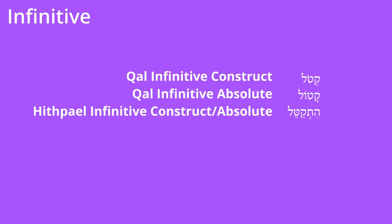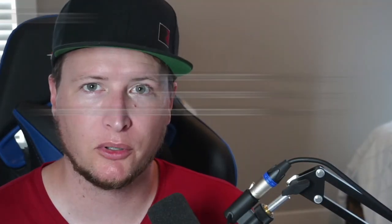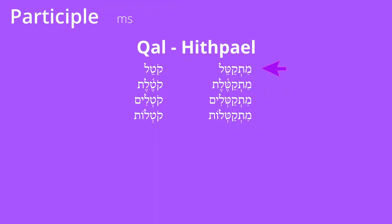The infinitive construct and infinitive absolute match the second masculine singular imperative in Hithpael: Hithkatel. In the participle, with the mem, we get 'Mith' at the beginning. And don't forget the dagesh forte in the second root consonant — consistent, just like Piel. Compare with Qal: Kotel / Mythkatel; Koteleth / Mythkateleth; Kotlim / Mythkatlim; Kotloth / Mythkatloth.